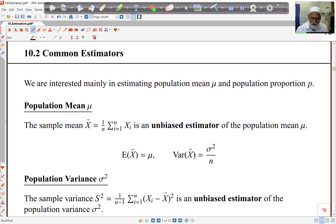So the common estimators we know from before are sample mean X bar estimates population mean, and we know it's unbiased because the mean of X bar is mu, and we know the variance of X bar is sigma squared upon n from our previous work on sampling.